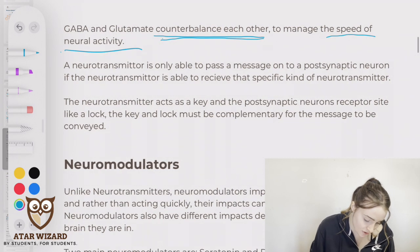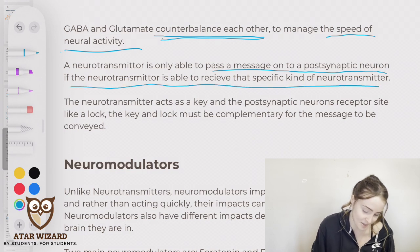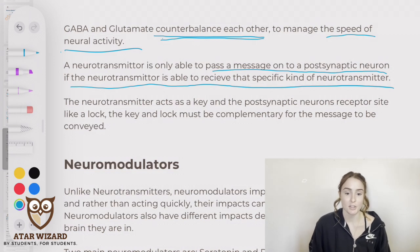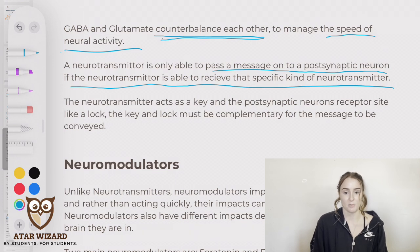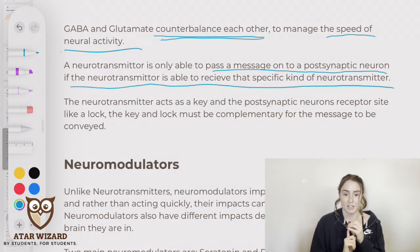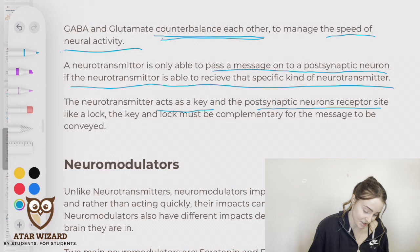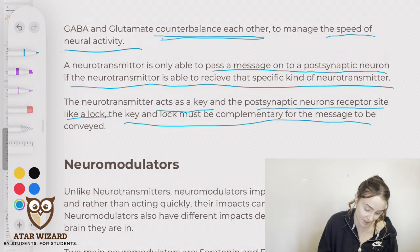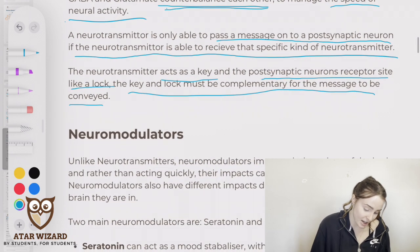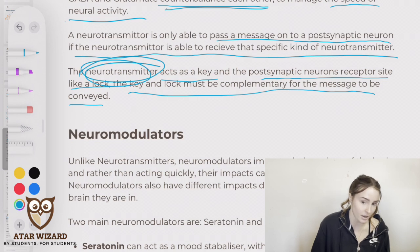A neurotransmitter is only able to pass a message on to the postsynaptic neuron if the receptor is able to receive that specific kind of neurotransmitter — some neurotransmitter receptors can't receive some neurotransmitters. The neurotransmitter acts as a key and the postsynaptic neuron's receptor site acts like a lock. The key and the lock must be complementary for the message to be conveyed, so if the neurotransmitter is the wrong kind of key, it's not going to unlock the neurotransmitter receptor.